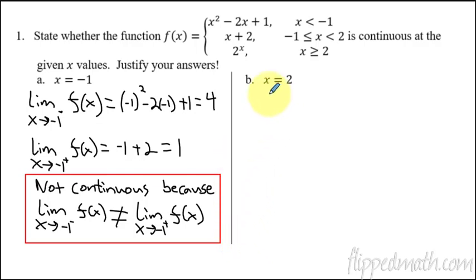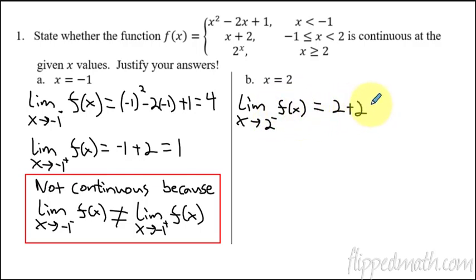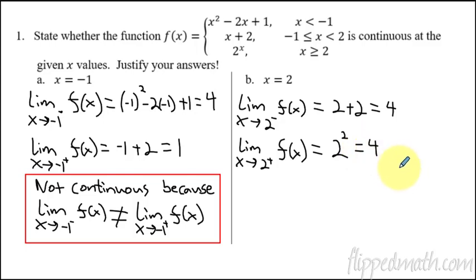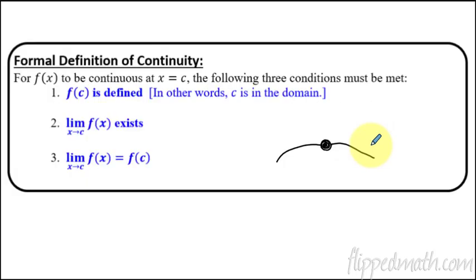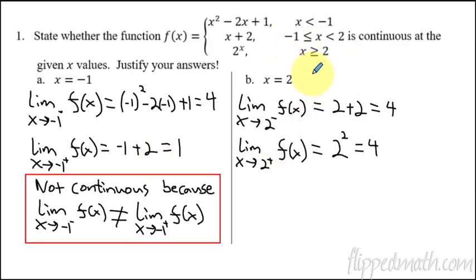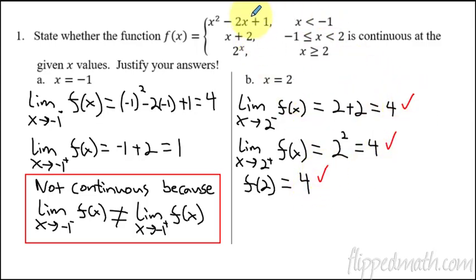Now part B — is this continuous at X equals two? We check the limit as X approaches two from the left of F of X: two plus two equals four. Now the limit from the right side at two: two squared equals four. Good news — the limit exists. Now we must confirm it equals F of C. What is F of two? Since the second piece uses greater than or equal to, we plug two into that piece: two squared equals four. All three values equal four.